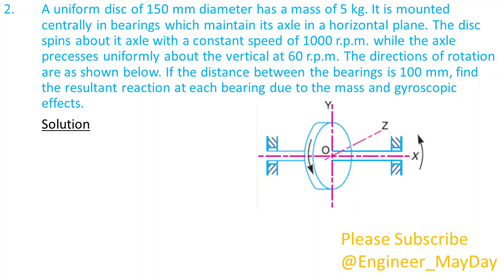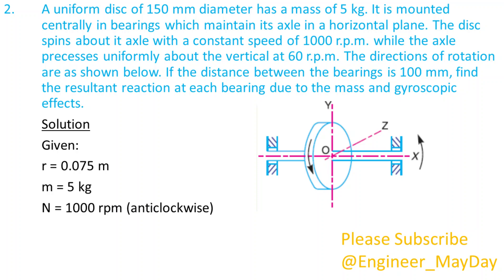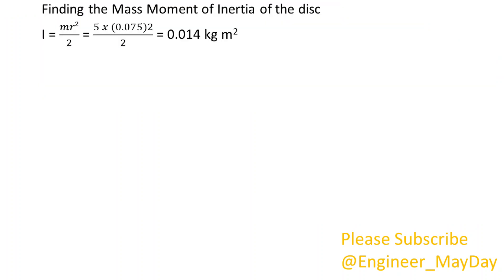Solution. Given: R equals 0.075m, M equals 5kg, N equals 1000rpm anticlockwise, NP equals 60rpm, X equals 0.1m. Finding the mass moment of inertia of the disc: I equals 0.014 kg·m².